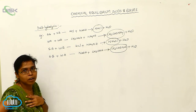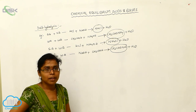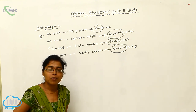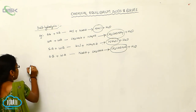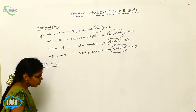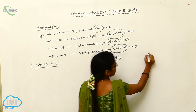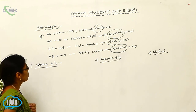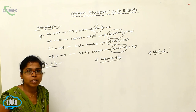Now we discuss salt hydrolysis. Hydrolysis of salt means salt plus water — whenever salt reacts with water, it converts into ions through dissociation. Salt hydrolysis is of three types: number one, cationic salt hydrolysis; number two, anionic salt hydrolysis; number three, neutral. The salt which undergoes hydrolysis and forms cations only is called cationic salt hydrolysis.